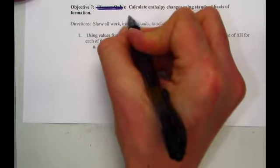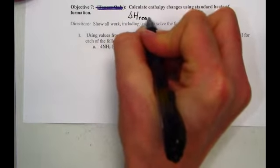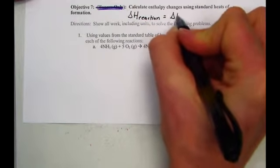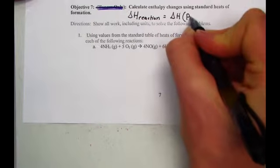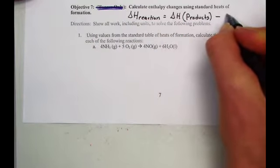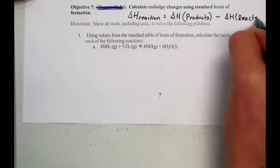The equation that we use, the delta H of our reaction, can be found by taking the delta H from the standard heats of formation chart of our products minus reactants. Products minus reactants.